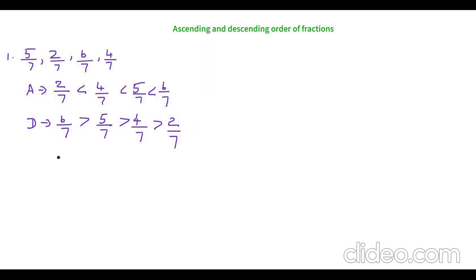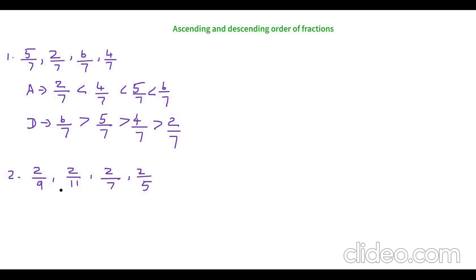Now let's see another example where we have unlike fractions. The second example is: 2 by 9, 2 by 11, 2 by 7, 2 by 5. As you can see, the numerators are all the same but the denominators are different, so they are unlike fractions. When we have different denominators but the same numerators, the biggest denominator makes the smallest fraction — so 2 by 11 is the smallest because we are cutting into more parts.